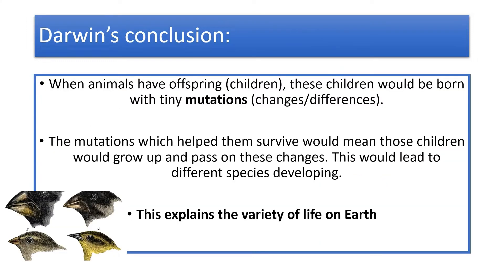What Darwin found was that lots of these finches were producing offspring, and these offspring would have tiny mutations or changes. The mutations which helped them to survive would mean those offspring would grow up, reproduce, and pass on those changes. This started to explain the variety of species and the variety of life on earth. Importantly, Darwin was saying this wasn't down to a creator god — this was down to a natural process.